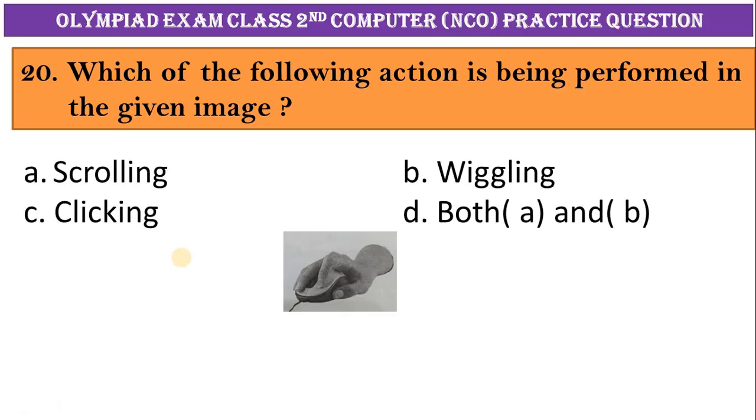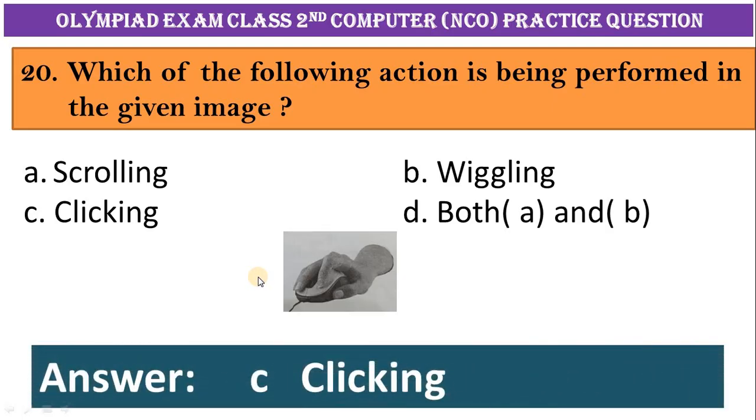Which of the following action is being performed in the given image? A, scrolling. B, wiggling. C, clicking. D, both A and B. Correct answer is option C, clicking.